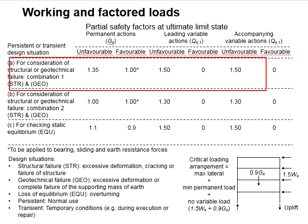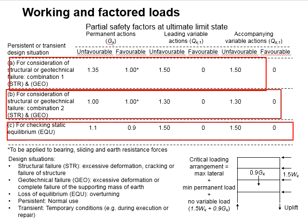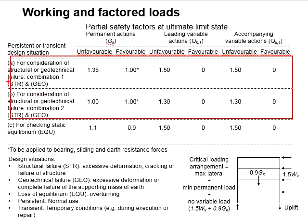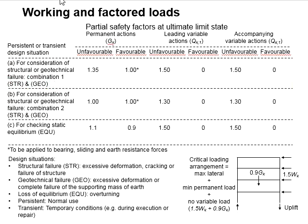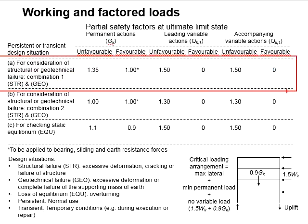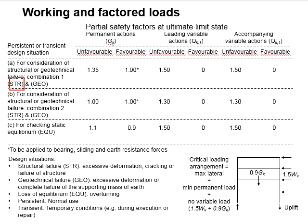There are three main categories in terms of the factors of safety. The first two categories refer to structural and geotechnical failure, while the third refers to static equilibrium or overturning failure. The factors of safety vary among these categories. To analyze for the strength of members, you may refer to category 1, which covers strength and geotechnical failure.